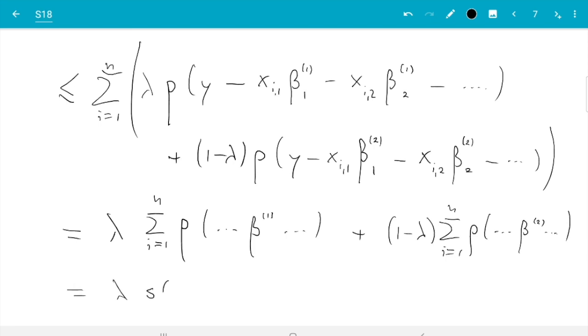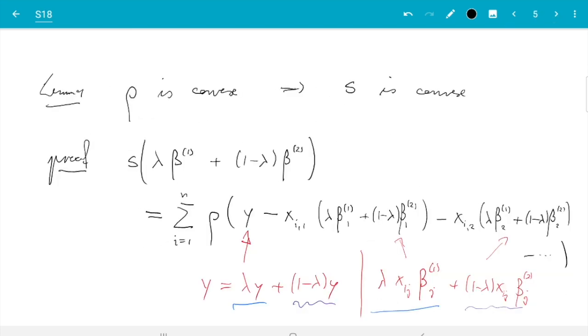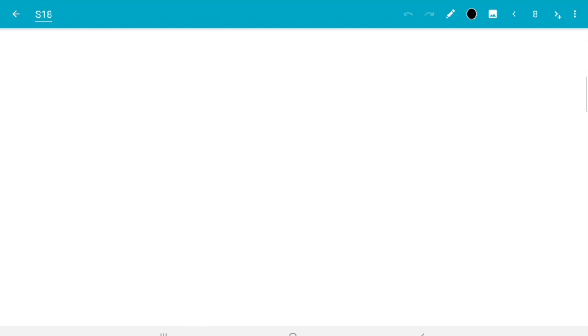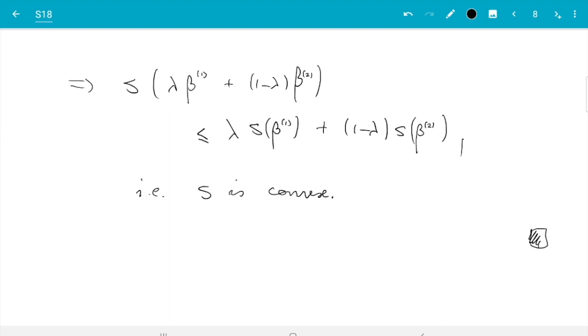So we get lambda S of beta 1 plus 1 minus lambda S of beta 2. And now we have shown what was needed namely S of the interpolated point is less than or equal to all the way down to the interpolation of S at the end points of the interval. So what we have shown is S of lambda beta 1 plus 1 minus lambda beta 2 is less than or equal to lambda S of beta 1 plus 1 minus lambda S of beta 2 which means S is convex.